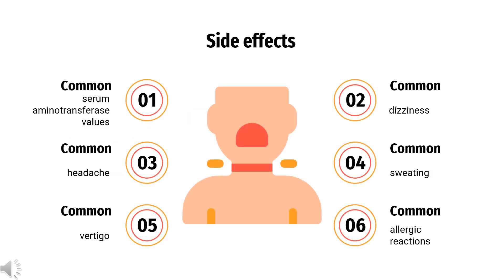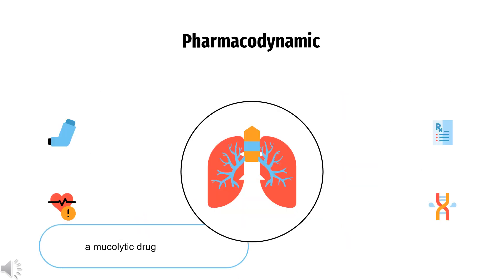Side effects. Gastrointestinal side effects may occur occasionally with bromexine, and a transient rise in serum aminotransferase values has been reported. Other reported adverse effects include headache, vertigo, dizziness, sweating, and allergic reactions.